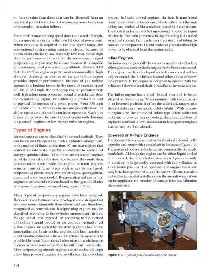Aircraft engines come in many different types such as gas turbine-based, reciprocating piston, rotary, two or four-cycle, spark ignition, diesel, and air or water-cooled. Reciprocating and gas turbine engines also have subdivisions based on cylinder arrangement and speed range. Reciprocating engines may be classified according to cylinder arrangement — inline, V-type, radial, and opposed — or by method of cooling: liquid-cooled or air-cooled. All piston engines are cooled by transferring excess heat to the surrounding air; in air-cooled engines, this heat transfer is direct from the cylinders to the air, requiring thin metal fins on the cylinders for increased surface area.